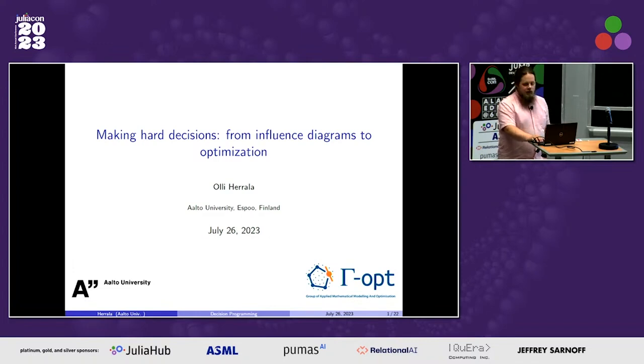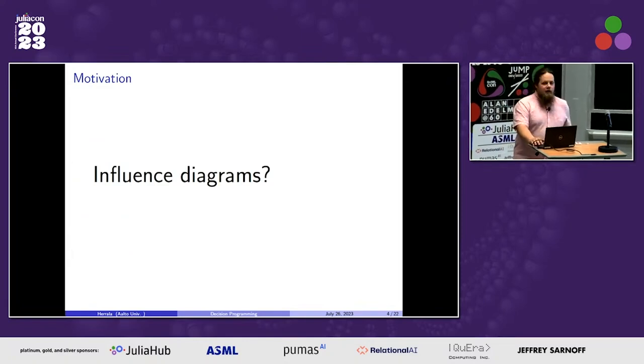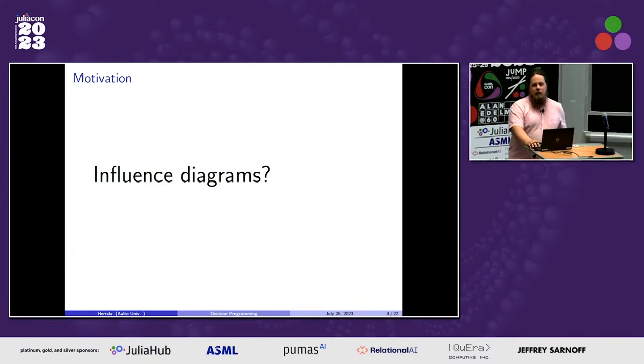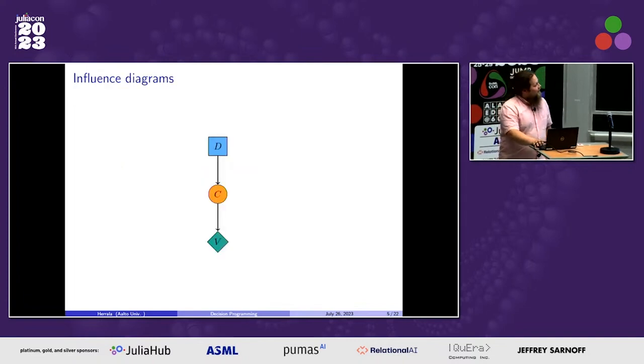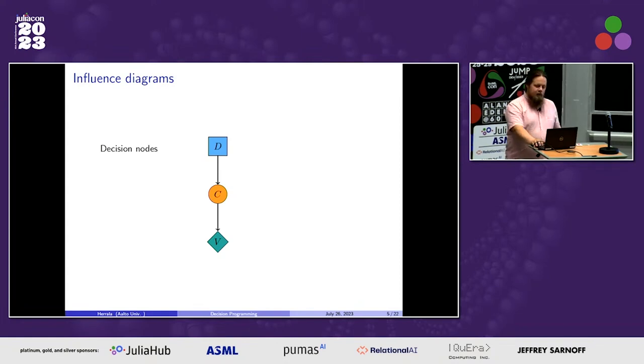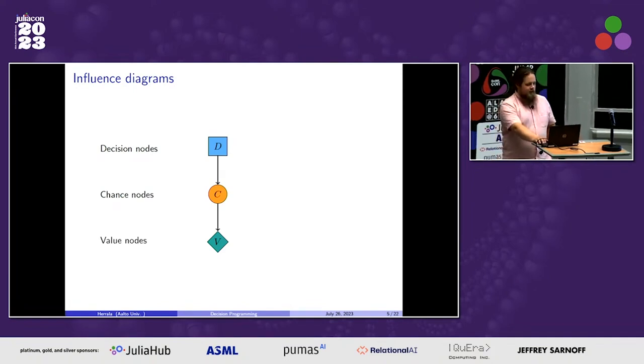For the second question, what are influence diagrams? Let's start now after lunch with a quick engaging question: how many of you know or have a basic idea what influence diagrams are? Influence diagrams are a structural representation of decision problems, often used in the field of decision analysis. We have three different types of nodes and then arrows drawn between them.